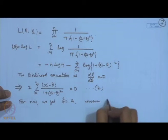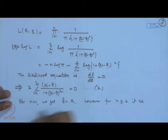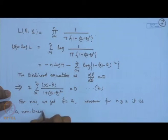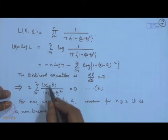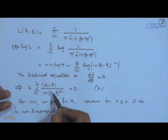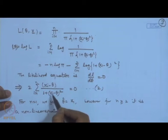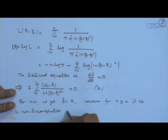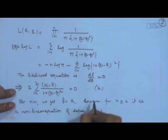Even for n=2, writing out the two terms gives an equation with terms up to θ³ in the numerator. In general with n terms, each denominator contributes degree 2, so multiplying n−1 denominators gives degree 2n−2, and the overall equation has degree 2n−1. So naturally we cannot solve this theoretically. Let us apply the method of scoring to this problem.